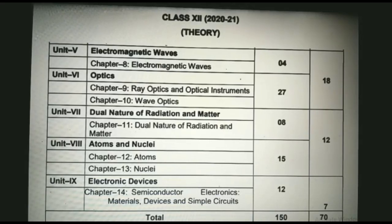The last unit, Unit 9, consists of one chapter: Chapter 14 semiconductor electronics - materials, devices and simple circuits. It is of seven marks.